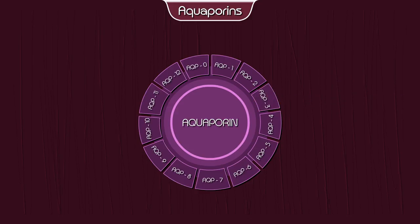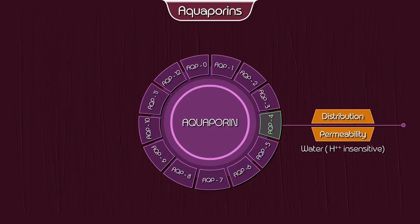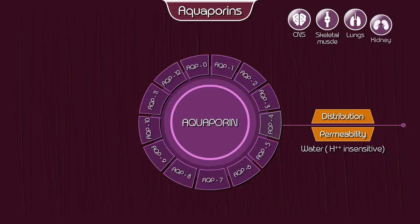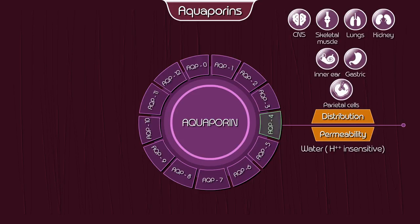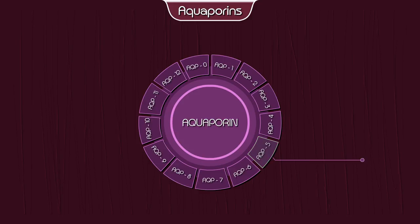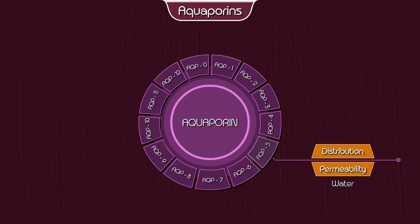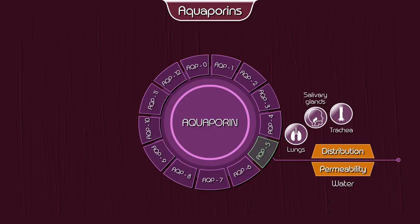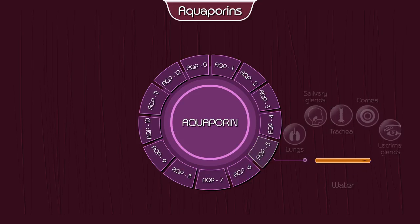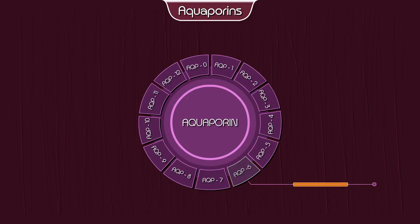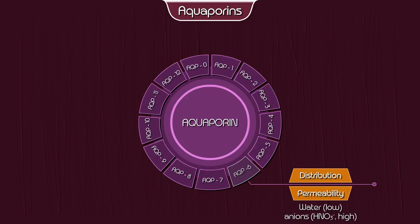Aquaporin 3 distribution also includes the colon. Aquaporin 4 — permeability: water; distribution: CNS, skeletal muscles, lungs, kidney, inner ear, gastric and parietal cells. Aquaporin 5 — permeability: water; distribution: lungs, salivary glands, trachea, cornea, and lacrimal glands.